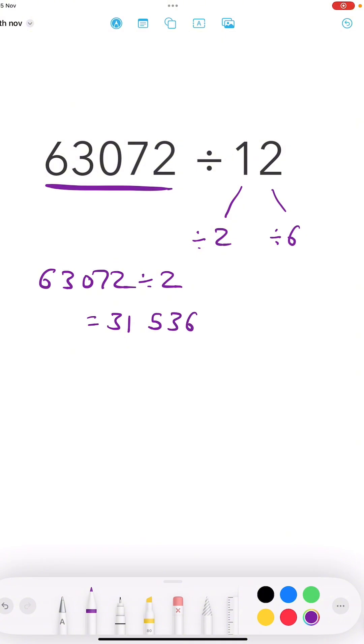Now I take my 31,536 and all I'm going to do is divide that by 6. And I can do that with short division, which is nice and quick.